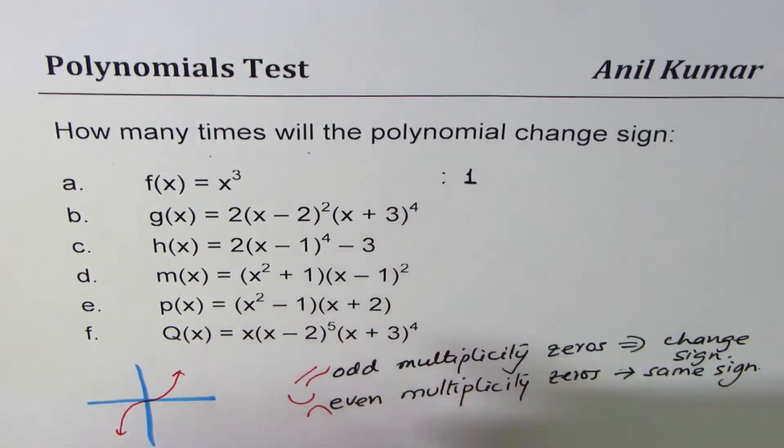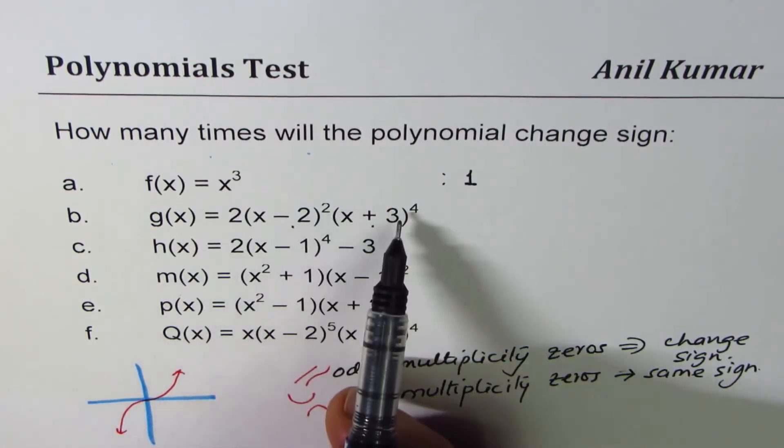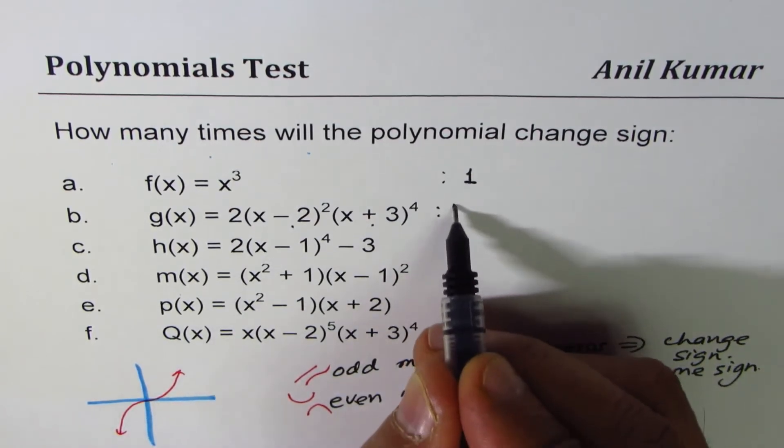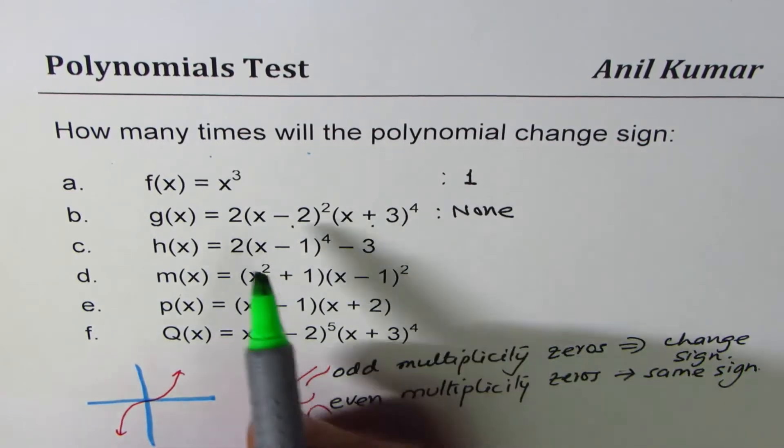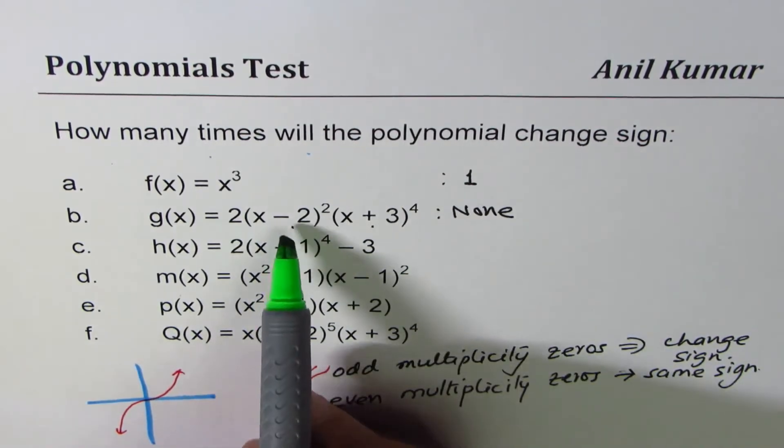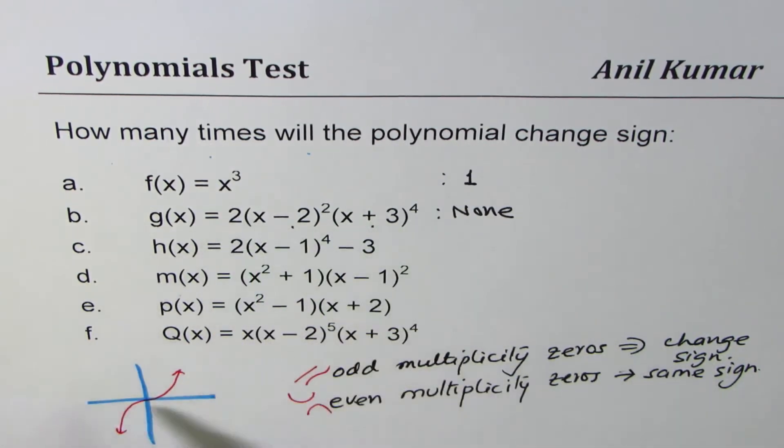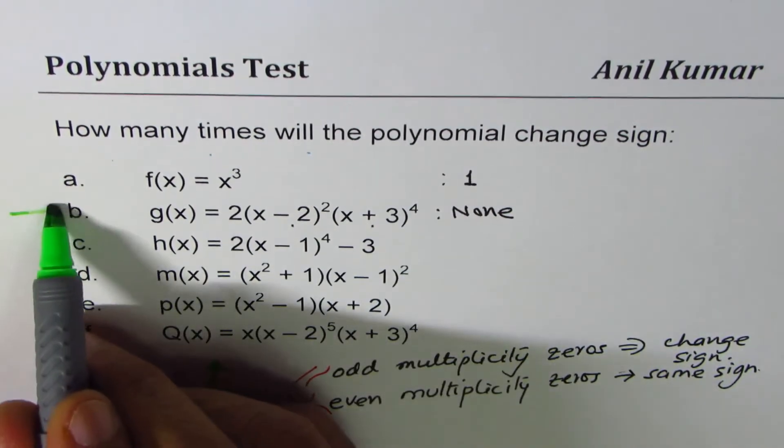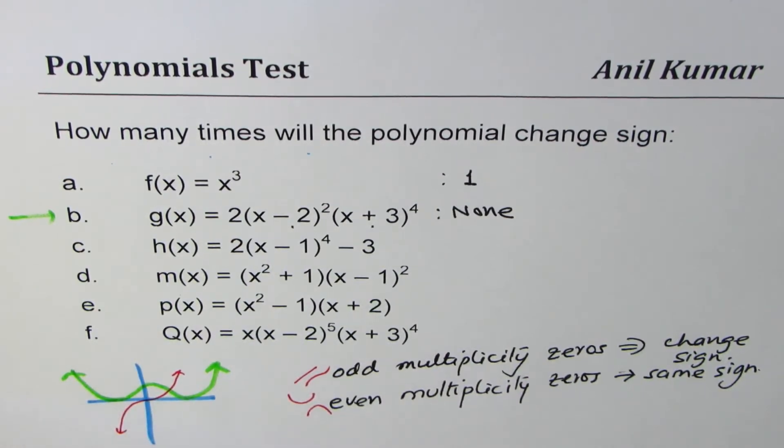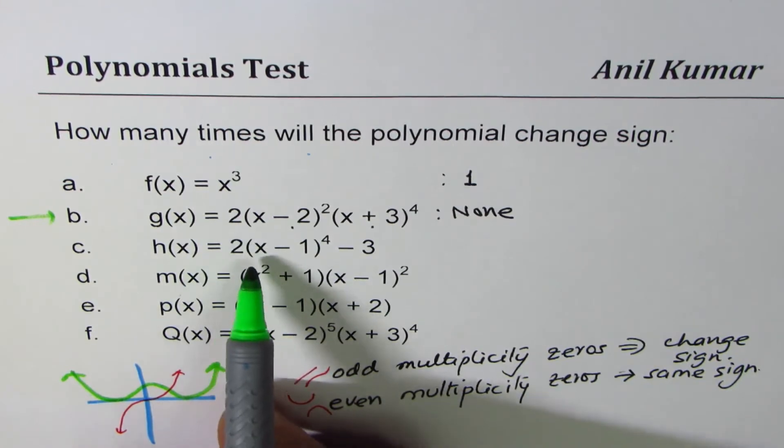Now here we have two zeros, both of them are even. So none, both of them are even. If you sketch this function, one of the zeros is at 2, the other one is at -3. Leading coefficient is positive so it will be kind of like this. As you can see, this function does not really change the sign.